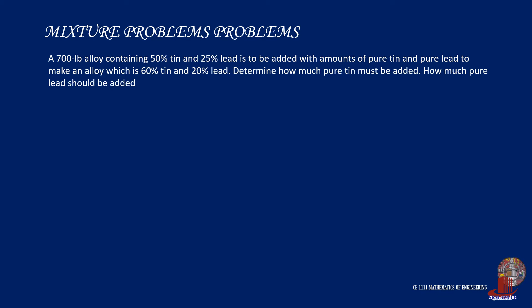The third problem. A 700 pound alloy containing 50% tin and 25% lead is to be added with amounts of pure tin and pure lead to make an alloy which is 60% tin and 20% lead. Determine how much pure lead should be added.